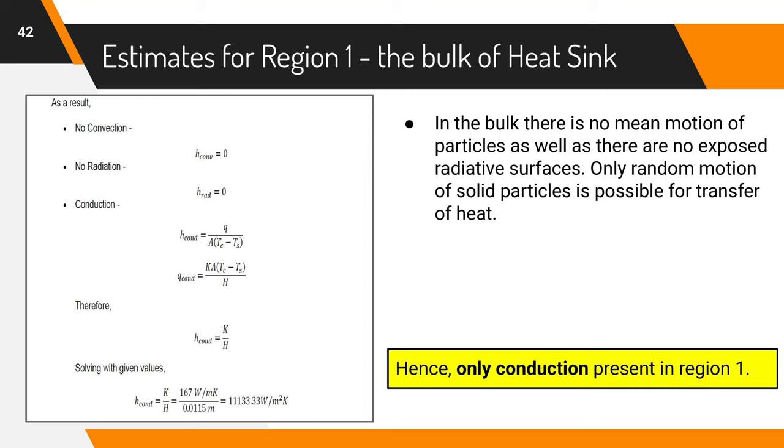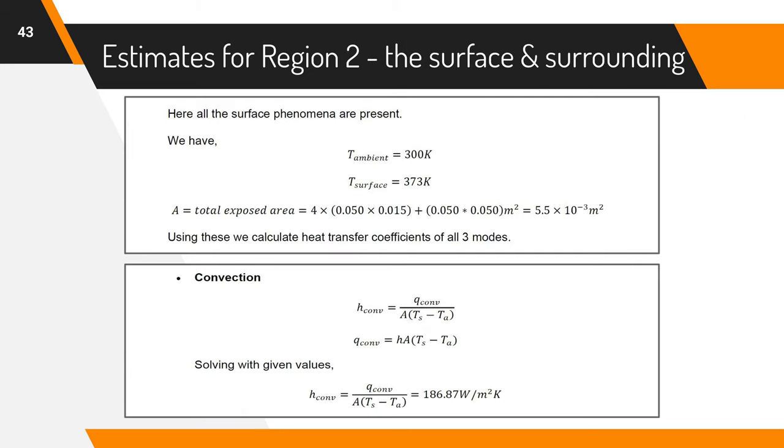In the bulk of the keyboard, the heat sink, we cannot have any motion other than random motion. Also, there is no radiation as there are no surfaces in this region. We simply calculate the conductive heat transfer coefficient which is obviously far from zero. Hence, only conduction in region 1.